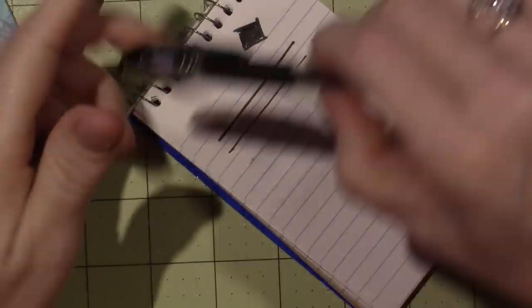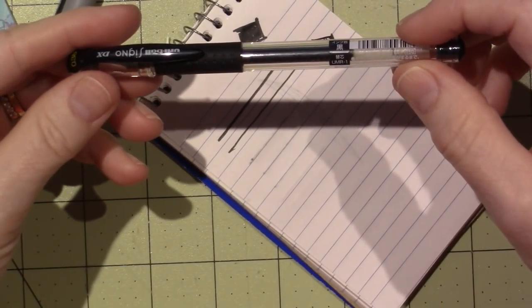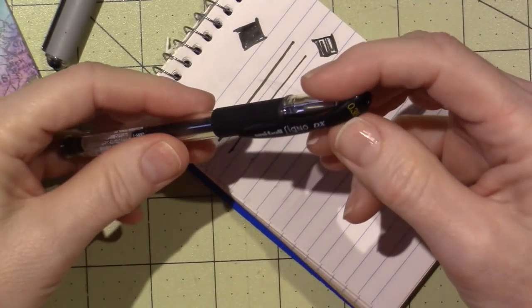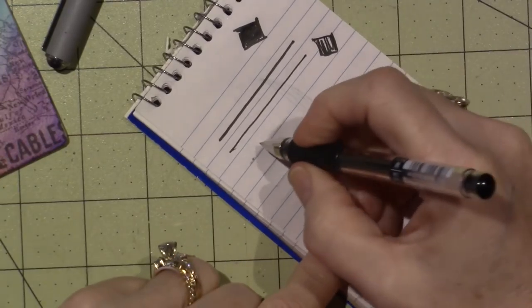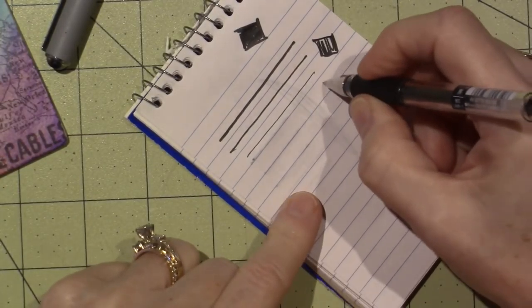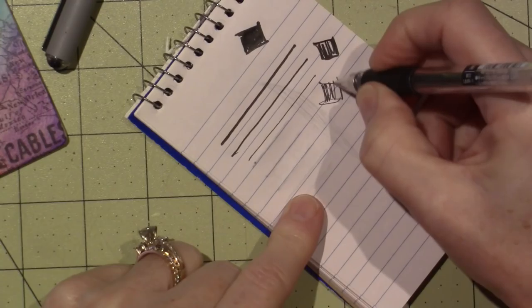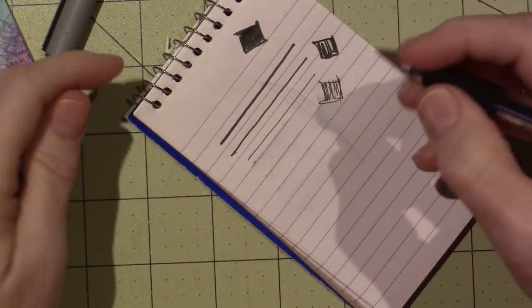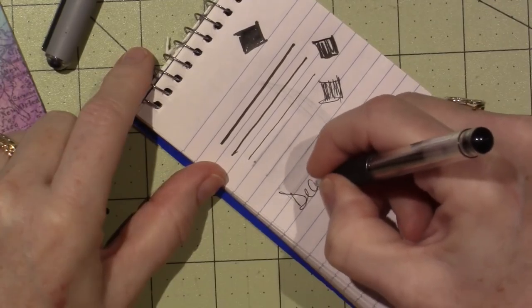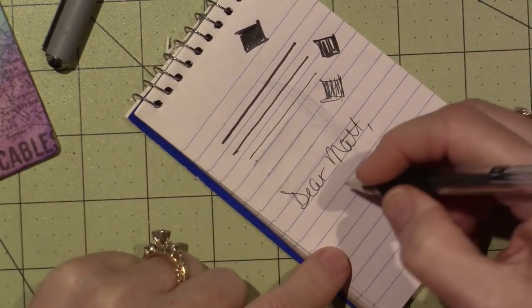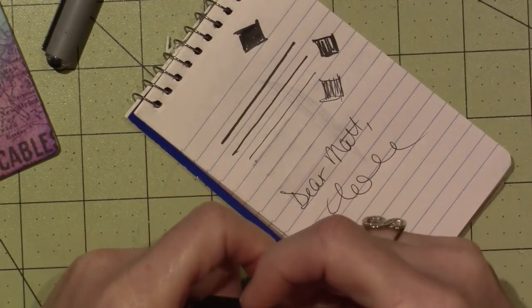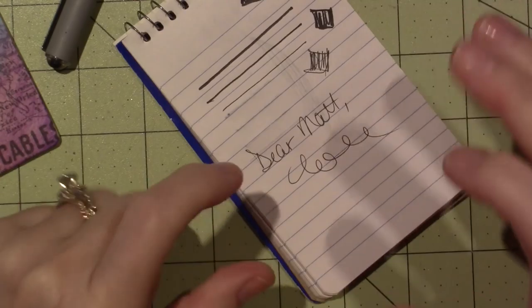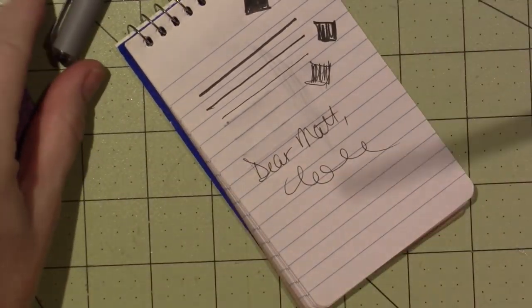And then this is the one that Tracy likes. This is a super fine point. The Signo DX, Uniball Signo 0.38. Look at that. So it's a much finer point. I wrote Matt a letter with this one. It was really nice to write, like, just a handwritten note. It doesn't seem too thick, the lines. So, anywho, that's the difference there. But it's all permanent ink.